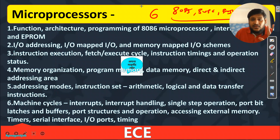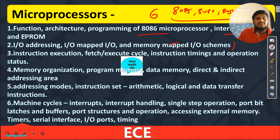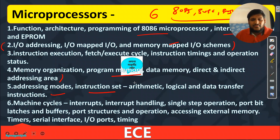Start with 8086 architecture, then programming, then interfacing with RAM and ROM, IO addressing, memory-mapped IO schemes, comparison between these. Then instruction execution: fetch-execute cycle, instruction timing and operation status, memory organization — program memory and data memory, direct and indirect addressing modes. Addressing modes are a very important topic. Complete the instruction set — arithmetic, logical, and all types.